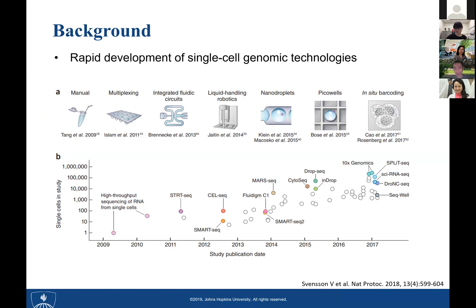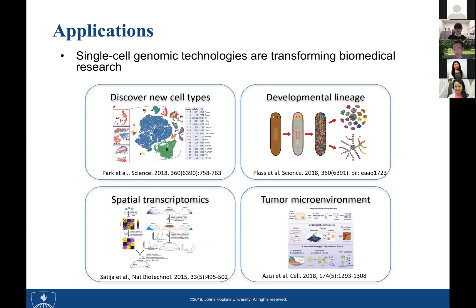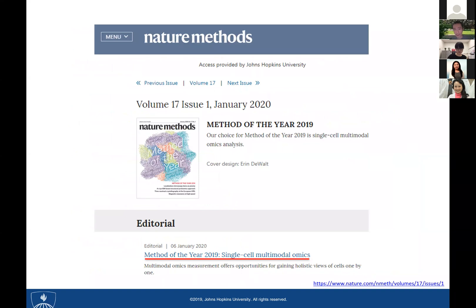In the past 10 years, all of us have witnessed the rapid development of single-cell genomic technologies. Unlike conventional bulk technologies that analyze average behavior of cells in a population, single-cell technologies allow you to analyze the behavior of each individual cell. With this ability, people can now detect new cell types, characterize their molecular profiles, study cell-cell interactions, or map dynamic regulatory programs. In 2013, single-cell sequencing was named method of the year by Nature Methods, and again in 2020, single-cell multi-omic analysis was named method of the year.